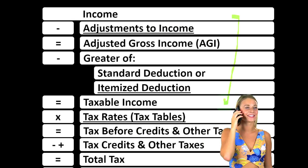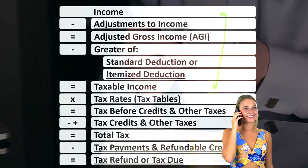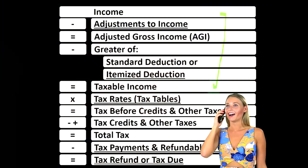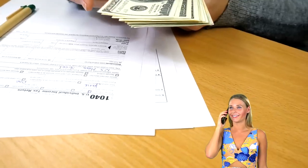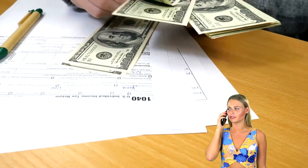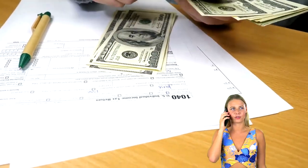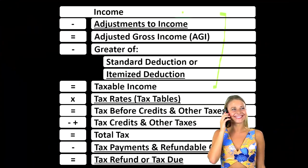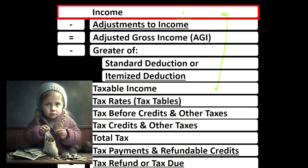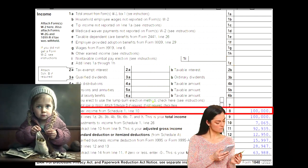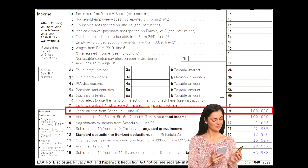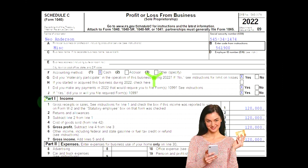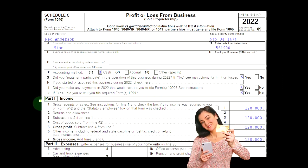Looking at the income tax formula, we're focused on line one income. The first half of the income tax formula is essentially an income statement — an outline or scaffolding with other forms and schedules flowing into these line items, one of those being Schedule C. Schedule C is essentially an income statement: business income minus business expenses gets to net business income, which flows into line one income of the income tax formula on page one of Form 1040. Schedule C flows into Schedule 1, which flows into Form 1040 line eight, 'Schedule C profit or loss from business.'